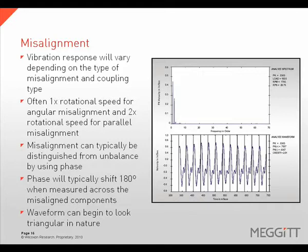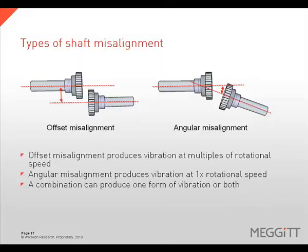Angular misalignment will often have a 1 times rotational speed response, while parallel misalignment will have a 2 times rotational speed response. Phase measurements will help distinguish misalignment from other faults like unbalance — the phase readings will shift 180 degrees when measured across the misaligned components. The waveform will also begin to look triangular in nature.